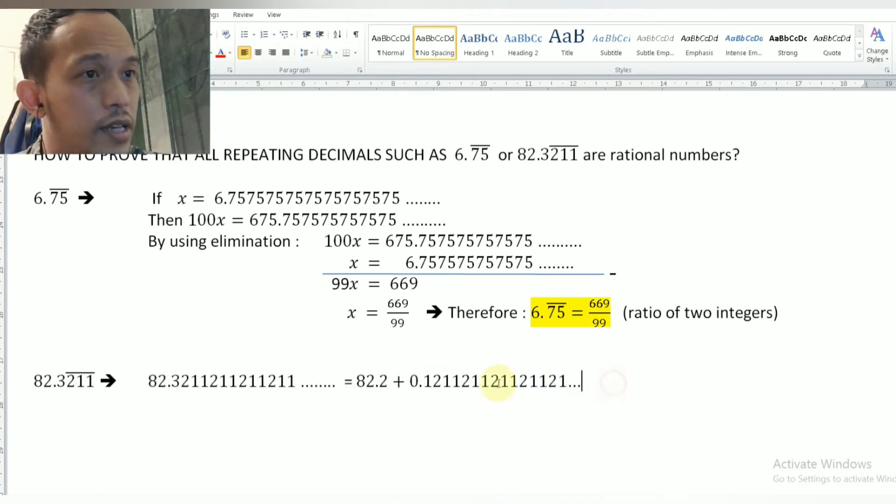What I mean is, this is not a good pattern, right? But when I convert this, I will have an easier one, which is 0.121121121 and so on.